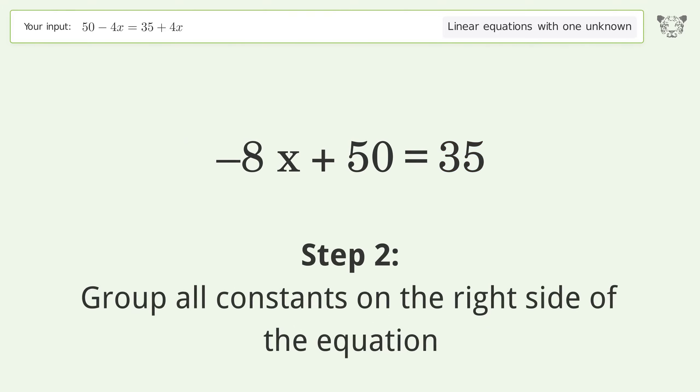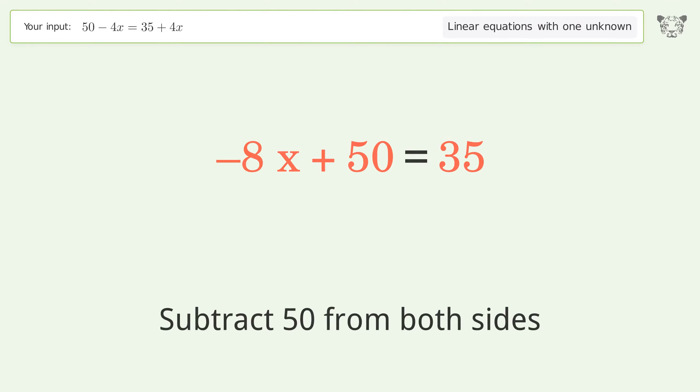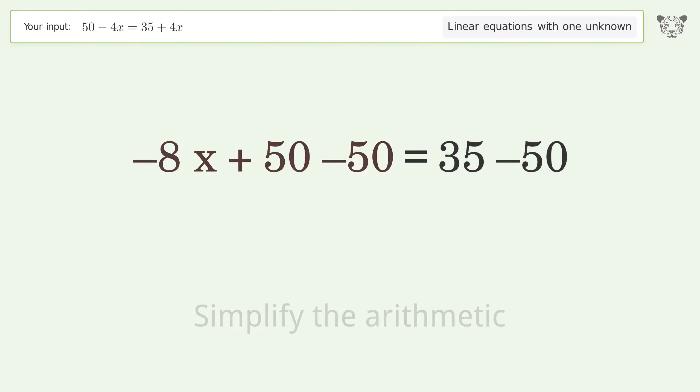Group all constants on the right side of the equation. Subtract 50 from both sides. Simplify the arithmetic.